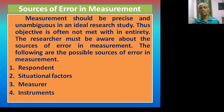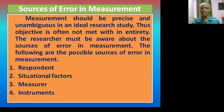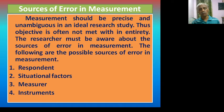Now, the sources of error in measuring. Where there is a scale, there may be errors. The measurement should be precise and unambiguous in an ideal research study, but this objective is often not fully met. The researcher must be aware of the sources of error in measurement. The following are the possible sources of errors in measurement.